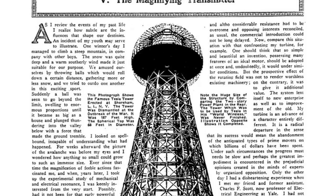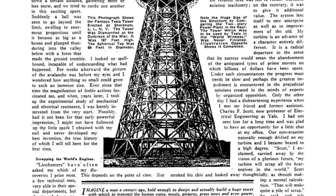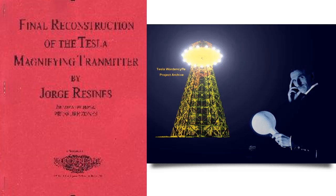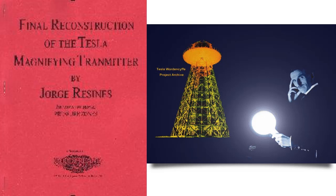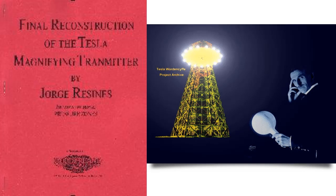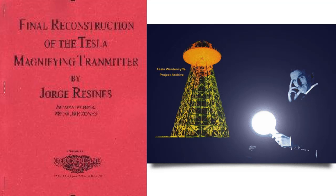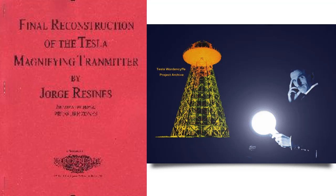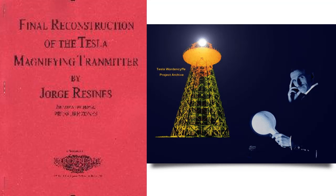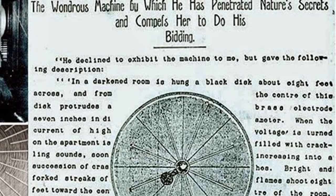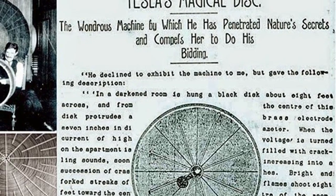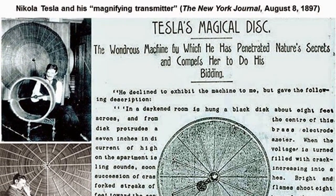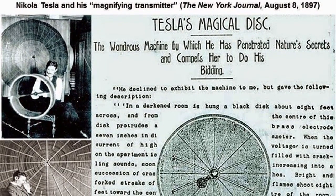A new book, Reconstruction of the Tesla Magnifying Transmitter, has just been released on Amazon. The book reveals many facts about ether physics, the most important of which is the difference between a magnifying transmitter and a Tesla coil. If you're interested in learning more about Tesla's magnifying transmitter and the ether physics behind it, this is the book for you.